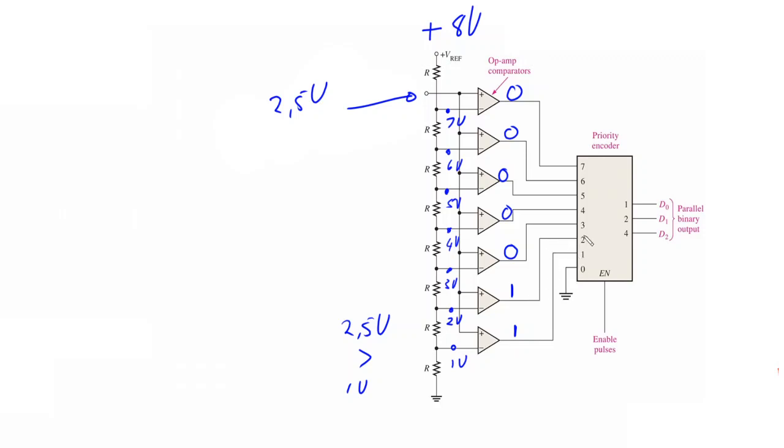A priority encoder looks at all its inputs and creates a binary priority number based on the input with the highest priority. 0 has the lowest priority and 7 has the highest priority. In this case we have a high input on 2 and a high input on 1. Since 2 is a bigger number than 1, the output we will find is the binary equivalent of 2. The flash converted binary equivalent of our input voltage which is 2.5 volts is therefore 010.